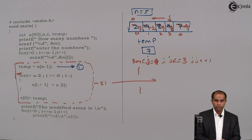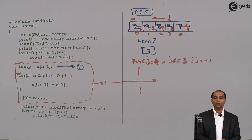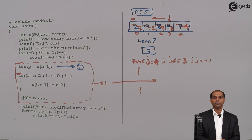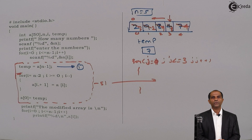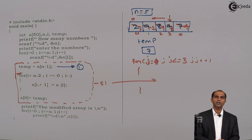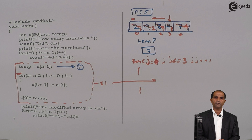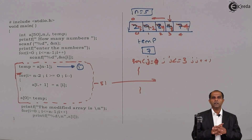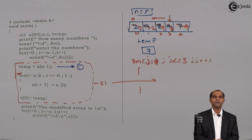Observe the code and have a clear idea, because this is a very important code from the examination point of view. Most university exams will have a question on cyclic rotation — clockwise or anticlockwise, or shifting left or right. I have illustrated this with an example on the right hand side. Thank you.